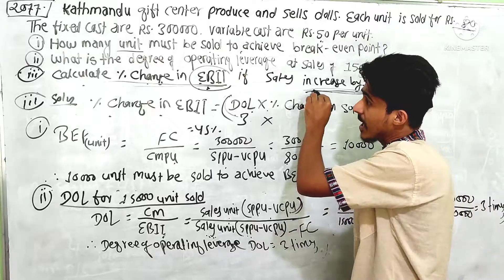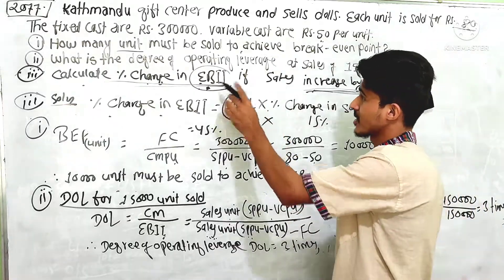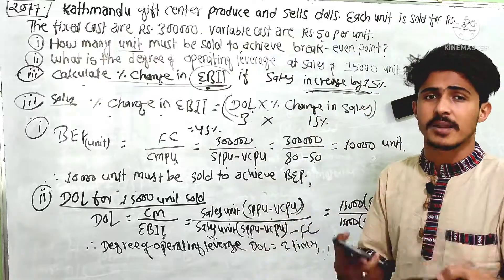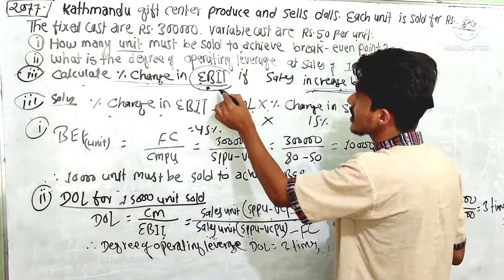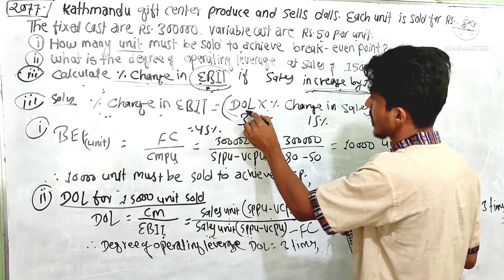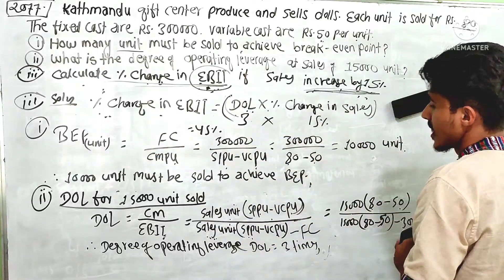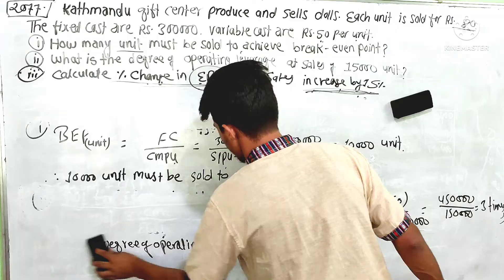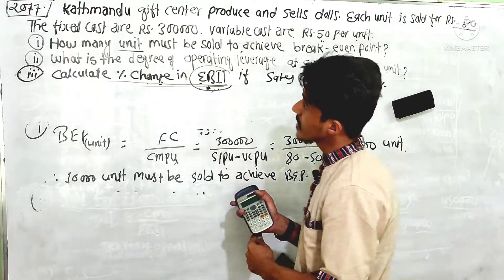In sales, we have to change the increase in EPS. DCL is the degree of combined leverage, also called DTL. We have to multiply DOL, DCL, and DFL. We need to take a look at EPS. In the same way, DCL equals DOL multiplied by DFL. The formula will be applied accordingly.